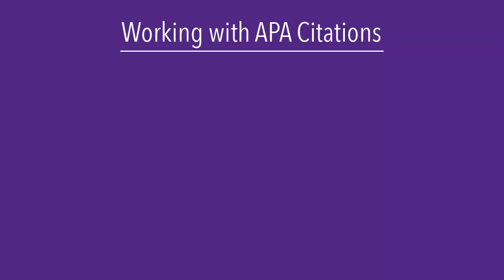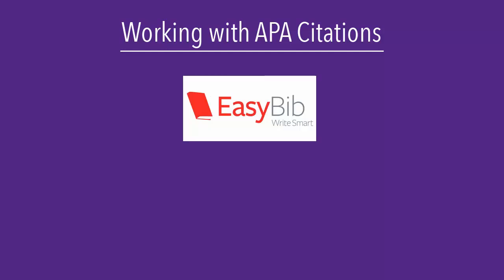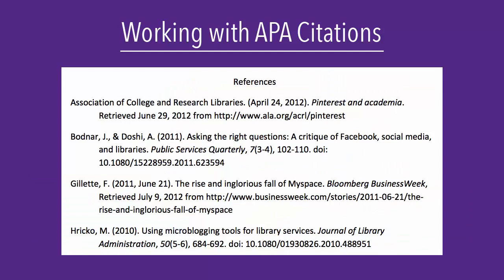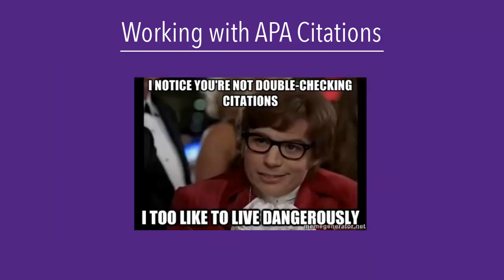Many of us like to use citation generators like EasyBib or citation managers like EndNote and Zotero. They make creating a list of sources so easy, but they do make mistakes, so you always need to double check that the citation is accurate.